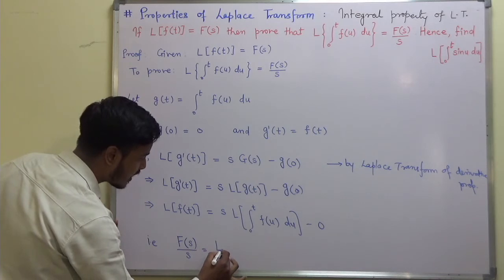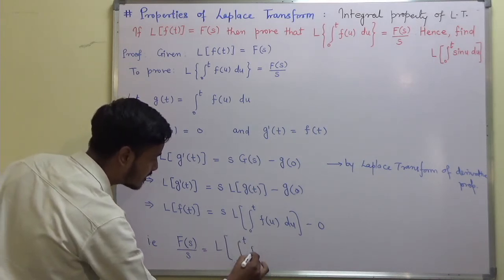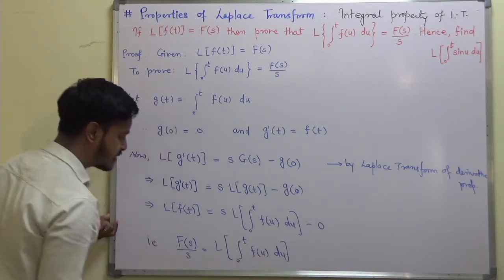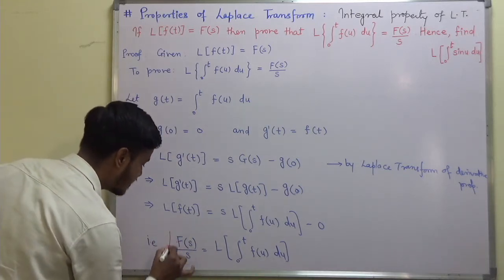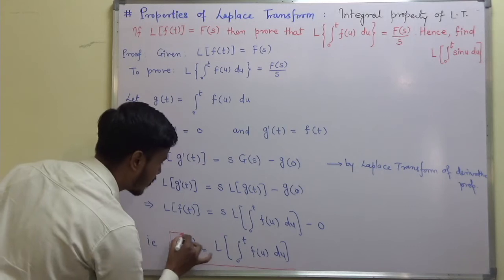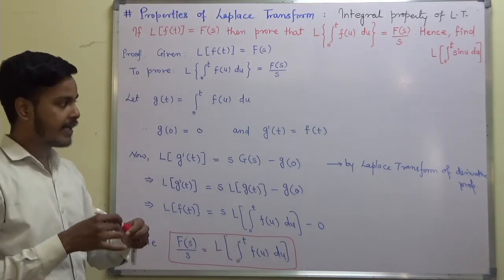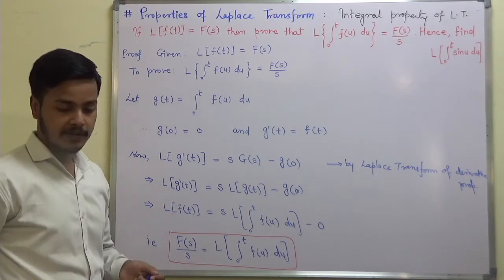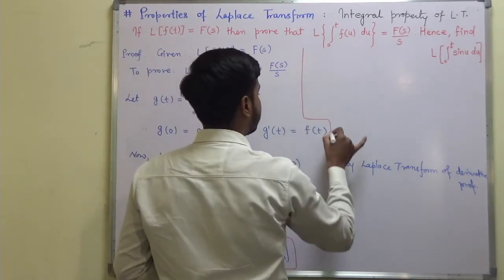Taking s to the left side, we get F(s)/s equal to the Laplace transform of the integral from 0 to t of f(u) du. That is what we wanted to prove — this is the integral property of the Laplace transform. Now we also have to find one result from this property.